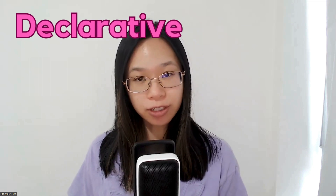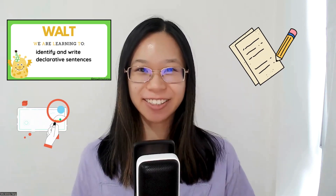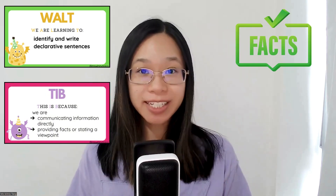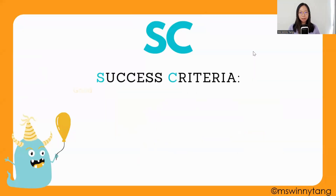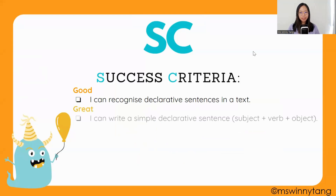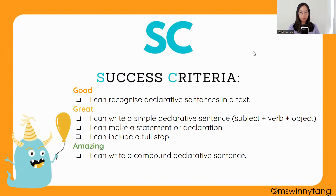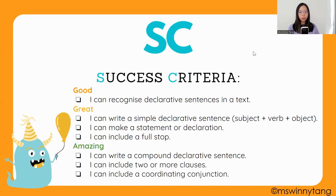The most commonly used sentence is the declarative sentence. That's why today we are learning to identify and write declarative sentences — because we are communicating information directly and providing facts or stating a viewpoint. Our success criteria today: good is if you can recognize declarative sentences in a text. Great is if you can write a simple declarative sentence with the subject, verb and object, and make a statement or declaration, and include a full stop. And amazing is if you can write a compound declarative sentence with two or more clauses and a coordinating conjunction.